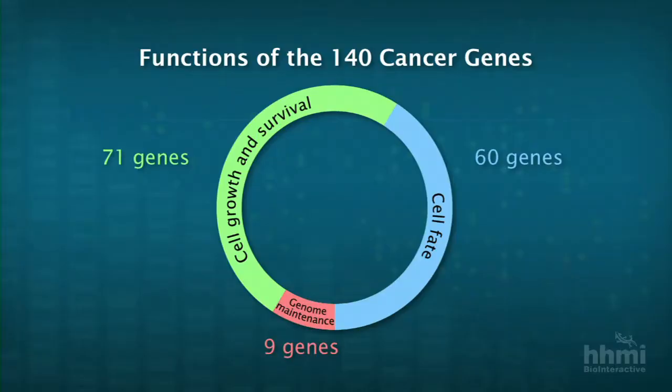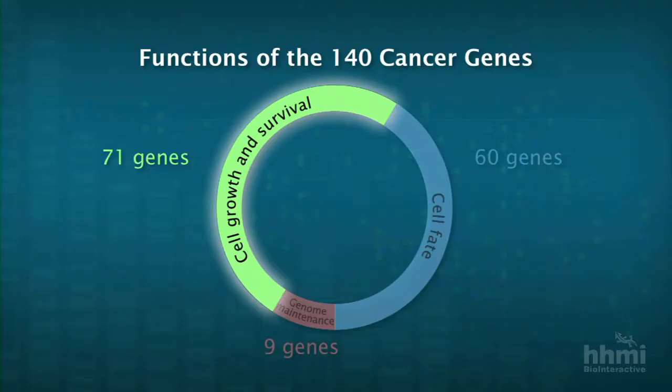With 140 cancer genes, can we now categorize them into different buckets and see some patterns that are emerging? The answer is yes. In this circle, I'm showing you three different categories that this community of cancer scientists has agreed upon. There may be small additions or new categories that emerge, but they're not going to be big dominant causes of major percentages of cancer. Let's look at the 71 cell growth and survival genes.